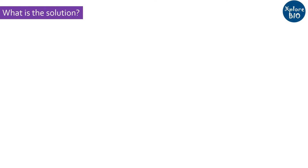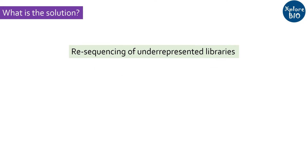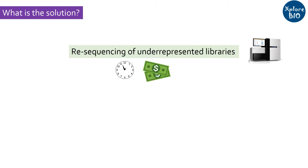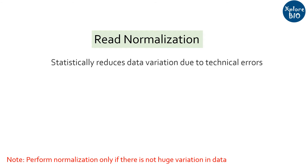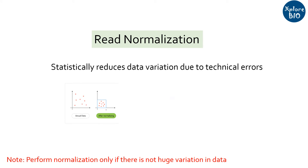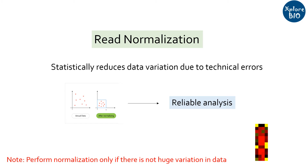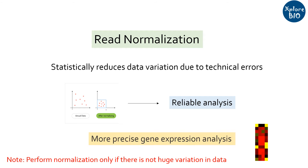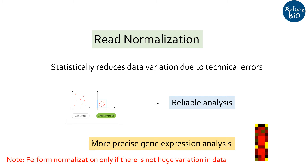To overcome the variation in the sequence data generated across the libraries, either you need to resequence those under-represented libraries — which would cost additional time and money — or you can opt for the more popular and cost-effective approach of read normalization. Read normalization is a computational approach to statistically bring similar data together and reduce analysis errors by minimizing data variation due to technical errors. It ensures that the measured expression levels reflect true biological differences among the samples rather than technical artifacts.